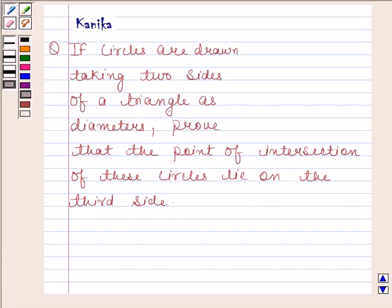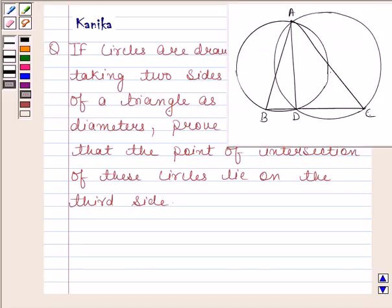Let us now make a diagram to understand this question. We have drawn two circles with diameters AB and AC, which are the sides of triangle ABC. These two circles intersect at point D and we have joined A and D. We have to prove that D lies on BC.